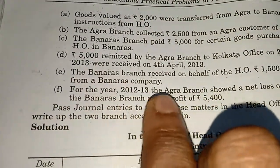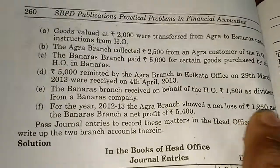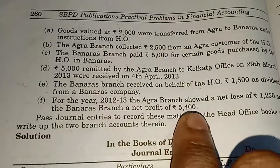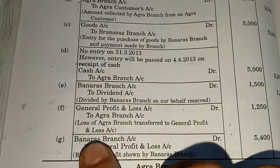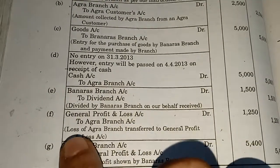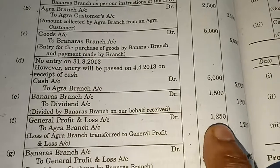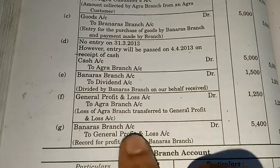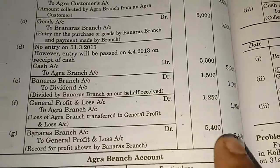For the year 2012-2013, the Agra branch showed a net loss of Rs. 1250 and the Banaras branch a net profit of Rs. 5400. The entries will be: General profit and loss account debit to Agra branch account — for transfer of loss of Agra branch, Rs. 1250; and Banaras branch account debit to general profit and loss account — to record profit shown by Banaras branch, Rs. 5400. Thank you.